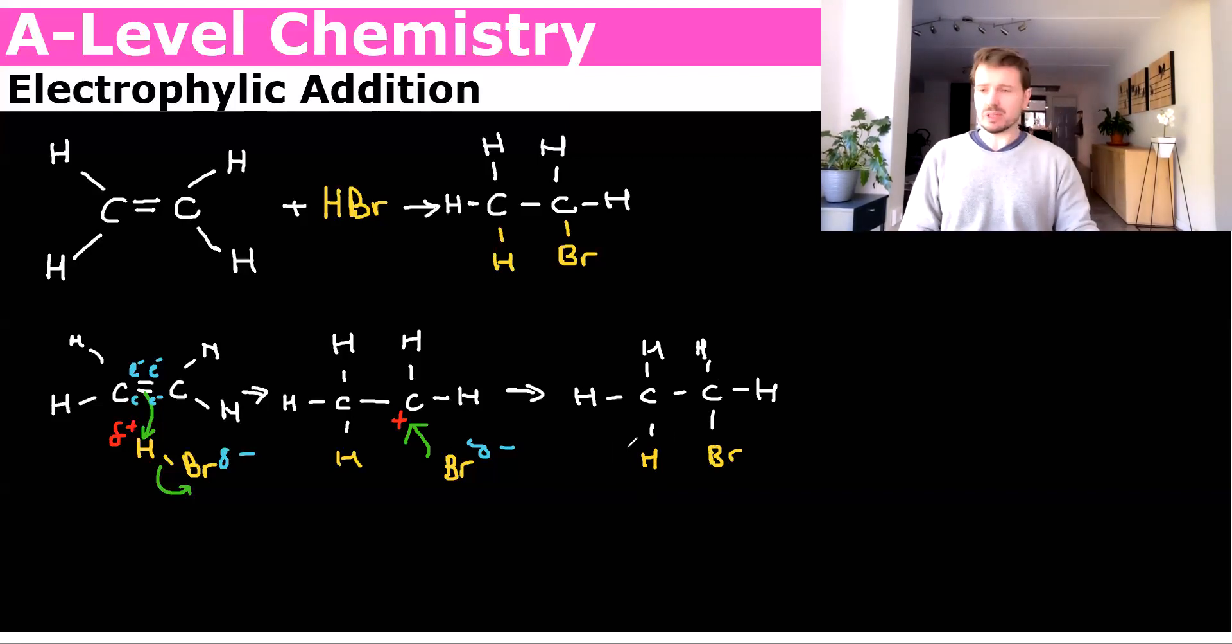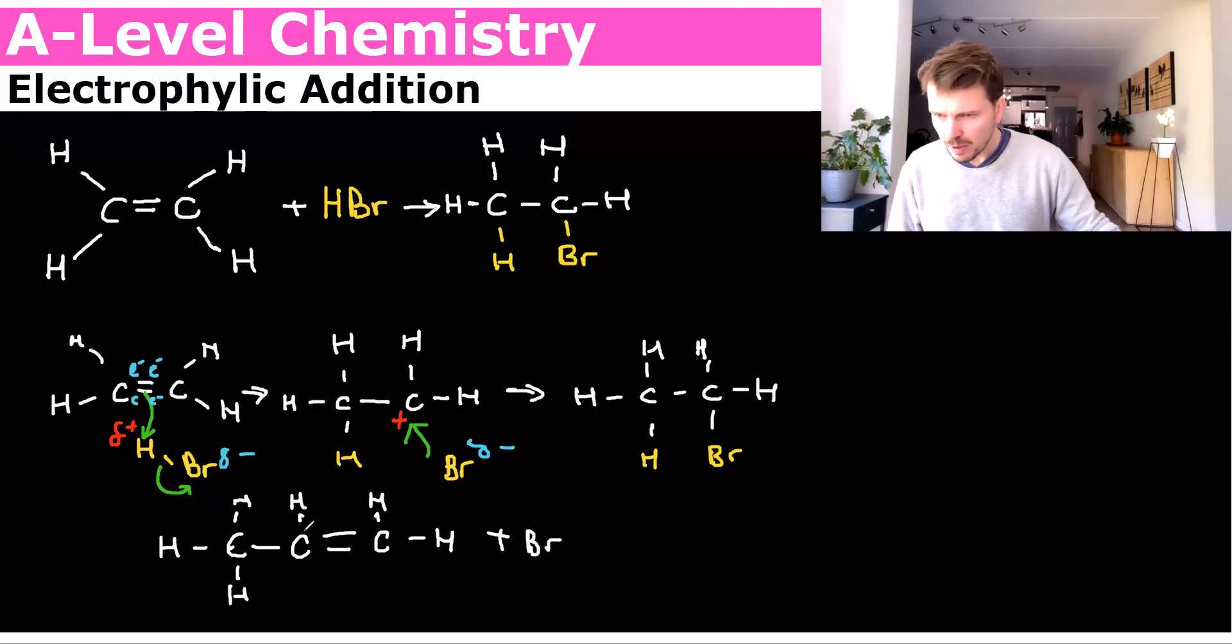Now I just want to show you because it's not always this simple. Sometimes it's not ethene. Sometimes you have a double bonded molecule, the CHCH. And you might wonder where bromine attaches. So if I've got this molecule here now, we would have an H here and an H here. Now let's say I had this molecule.